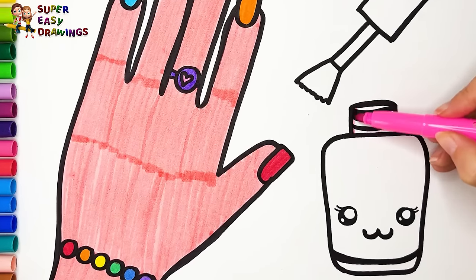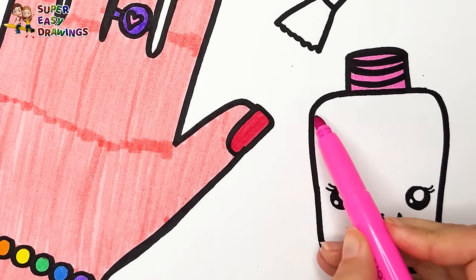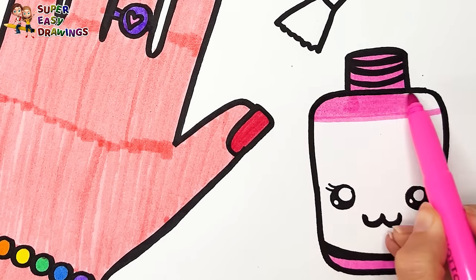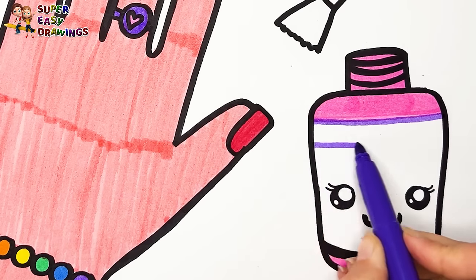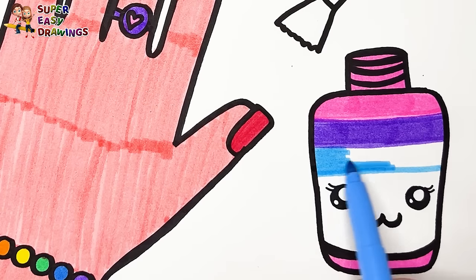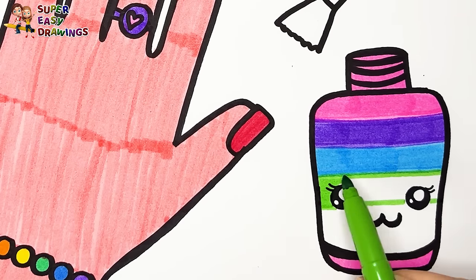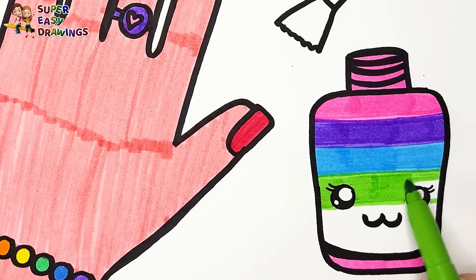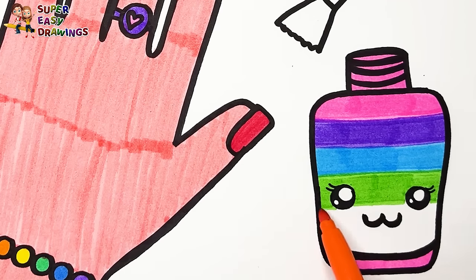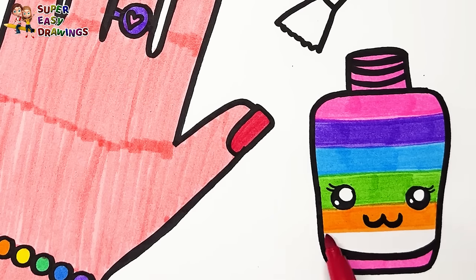Now we are going to color the nail polish container. Pink, purple, light blue, light green, orange, red.